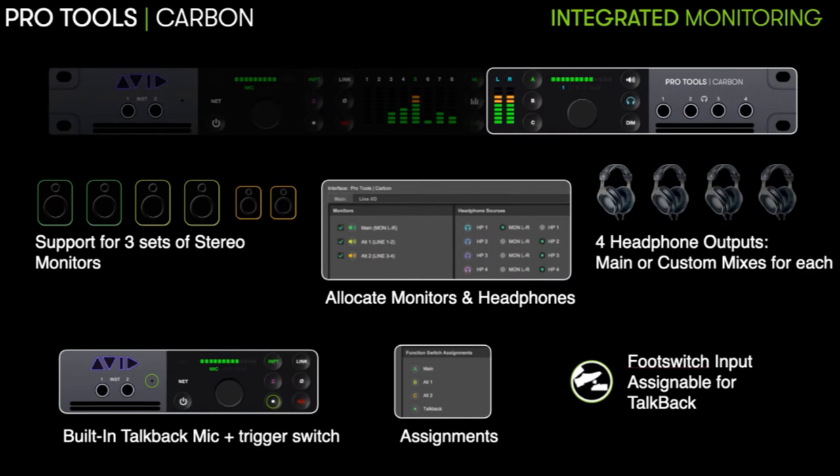For monitoring on Carbon, you can connect up to three pairs of stereo speakers and there are also four headphone outputs on the front panel. You can go into Pro Tools and create individual cue mixes for the artists or band members depending on what they would like to hear in the mix. You also have a talkback function on the front panel of Carbon which is also assignable to a foot switch.